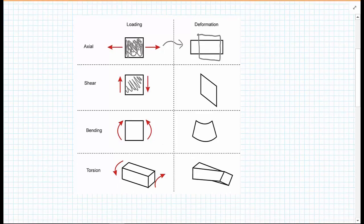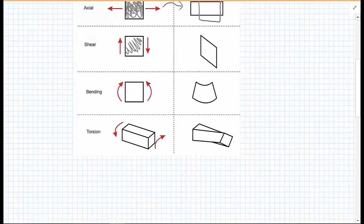Then we have what's known as bending. We have our same block of material. We're applying a clockwise moment on the left-hand side and an anti-clockwise moment on the right-hand side. As a result, our square block develops a curvature. The material is stretched at the bottom, so the bottom will be in tension, and it's got shorter at the top, so the top of the material will be in compression.